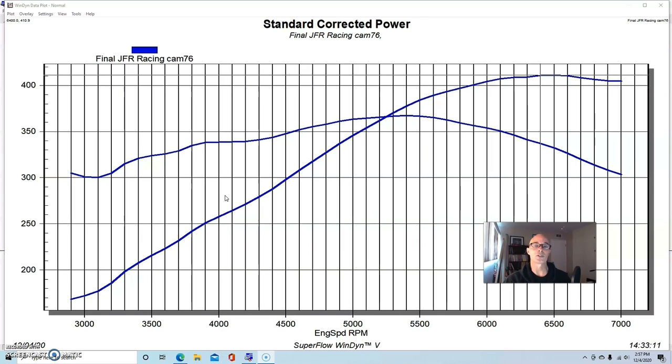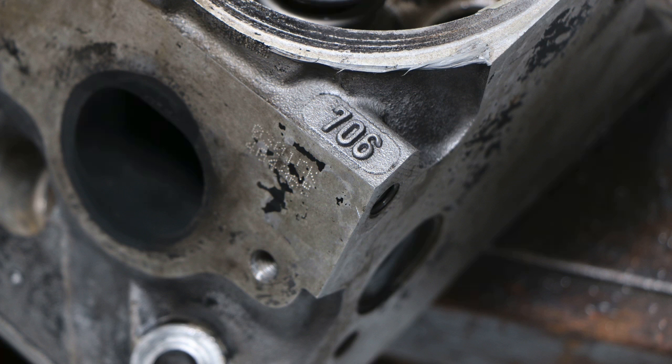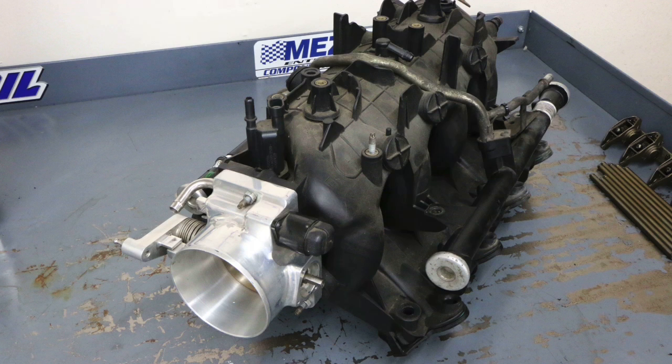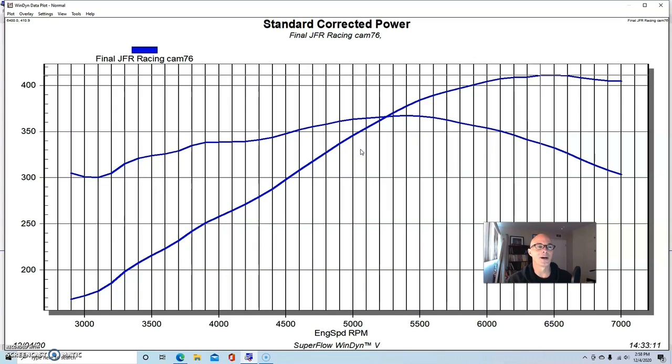If you step up to even larger displacement - say a 5.3 liter or a 6 liter or even bigger like a 383 or 408 - you have to start being concerned about back pressure because on a bigger combination you get to the limit of the flow rate of the hot side before you hit the compressor side. On this 4.8 liter we didn't have that problem.